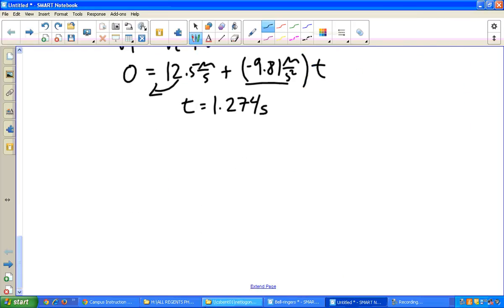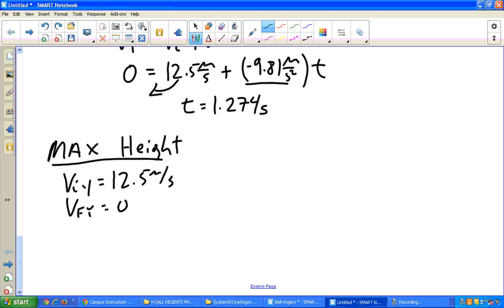So I'll go ahead and I'll solve for max height first. And again, just recall, we have Viy equals 12.5 meters per second, Vfy at the max height equals zero, we know the time of t equals 1.274 seconds because that's the time from Viy to Vfy, and we have acceleration equals gravity.